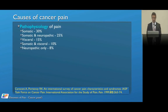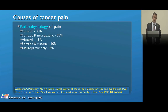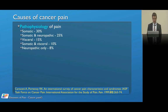A large international multi-centred study by the IASP task force in 1999 looked at causes of cancer pain. They found the pathophysiology of pain to be multi-dimensional: 30% of patients had somatic pain from muscles, joints, and the musculoskeletal system; 25% had somatic and neuropathic pain; 15% had visceral pain; 10% had somatic and visceral pain; and 8% had only neuropathic pain. The percentages don't add up because you can have two or more types of pain in cancer sufferers.